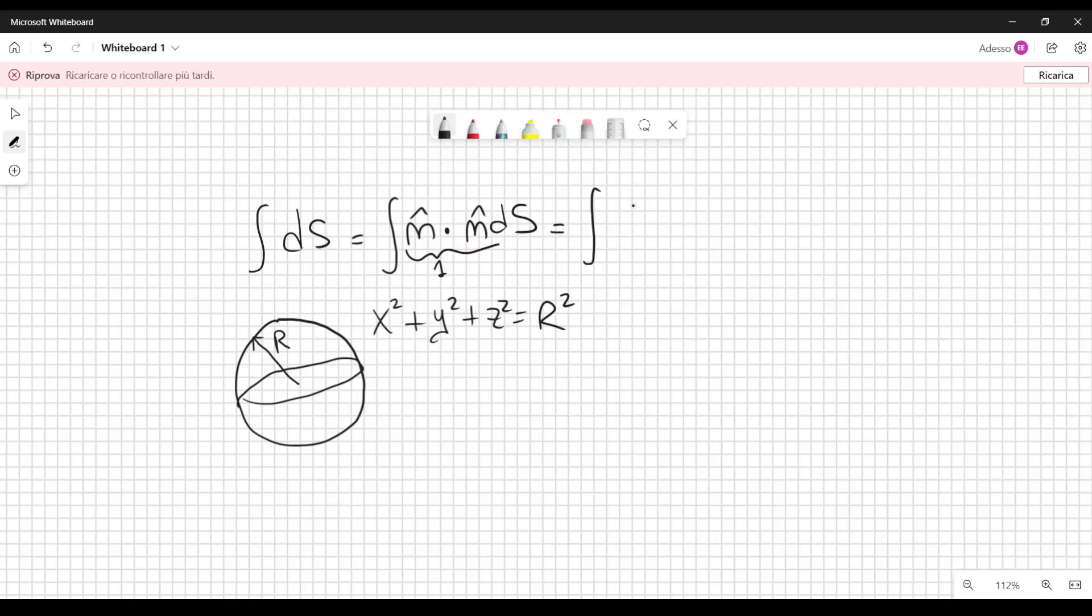And this is equal to the integral of the divergence of the normal. And then we integrate over the volume in this case. So this is an integral over a closed surface, and then here we have an integral over the volume contained by that surface.